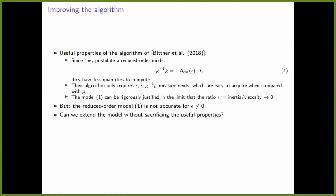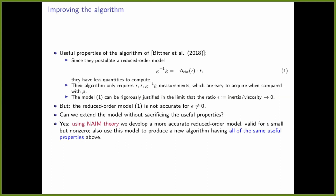Why is this algorithm good? Because they're postulating a reduced order model, they have fewer quantities to compute. Also, the quantity they're not computing — the momentum — is arguably the hardest one to measure. So they only deal with easy-to-measure quantities. The model can be rigorously justified in the limit that the ratio of inertia to viscosity goes to zero, but in the real world, no systems have zero inertia or infinite viscosity. So the question arises: can we extend the model without sacrificing these useful properties?